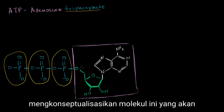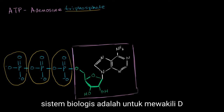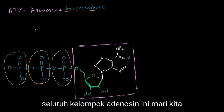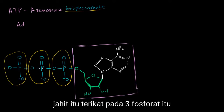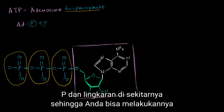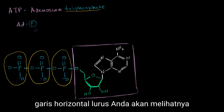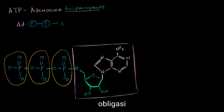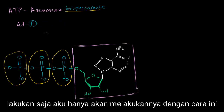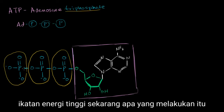One way that you can conceptualize this molecule, which will make it easier to understand how it's a store of energy in biological systems, is to represent this whole adenosine group — let's just represent that as AD. And then let's show it bonded to the three phosphoryl groups, with a P in a circle. Sometimes you'll see it depicted with essentially higher energy bonds, to show that these bonds have a lot of energy. But these are high energy bonds.